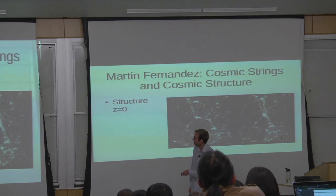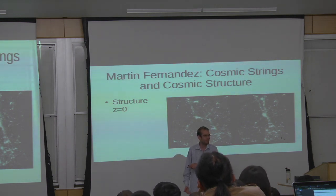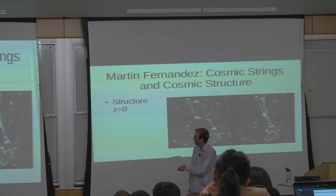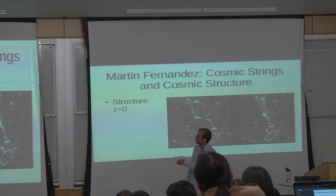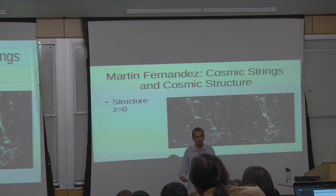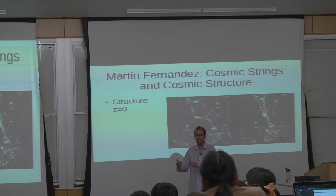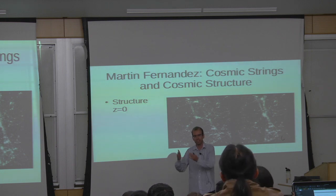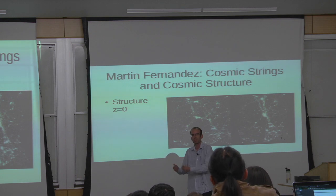I believe this is a 60 megaparsec box — relatively small, but big enough. So what we're going to do is run simulations with and without cosmic strings, look for differences, and then compare to observations in the real universe to say: does the real universe look like one which a cosmic string went through or does it not?